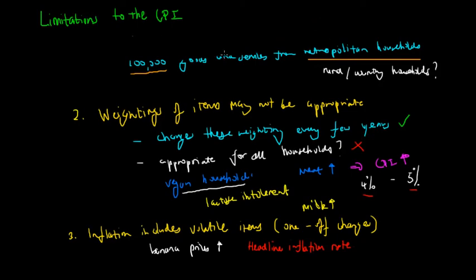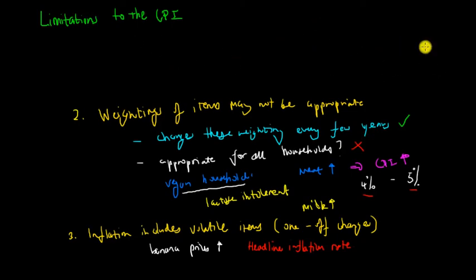We know that representativeness is actually a limitation. So we have one is representativeness or lack of. Two we have inappropriate weightings. And three we have down here.